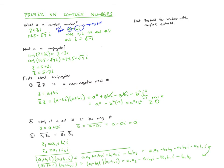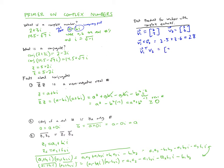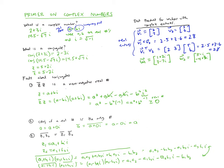We need to know about conjugates in order to define the dot product for vectors with complex entries. For vectors with real entries, say v₁ = (2, 3) and v₂ = (5, 6), we compute the dot product by multiplying corresponding entries and adding them up. This can also be done by transposing the first vector and multiplying by the second using matrix multiplication. For vectors with complex entries, we do almost the same thing, but take the conjugate of the entries in the first vector first.